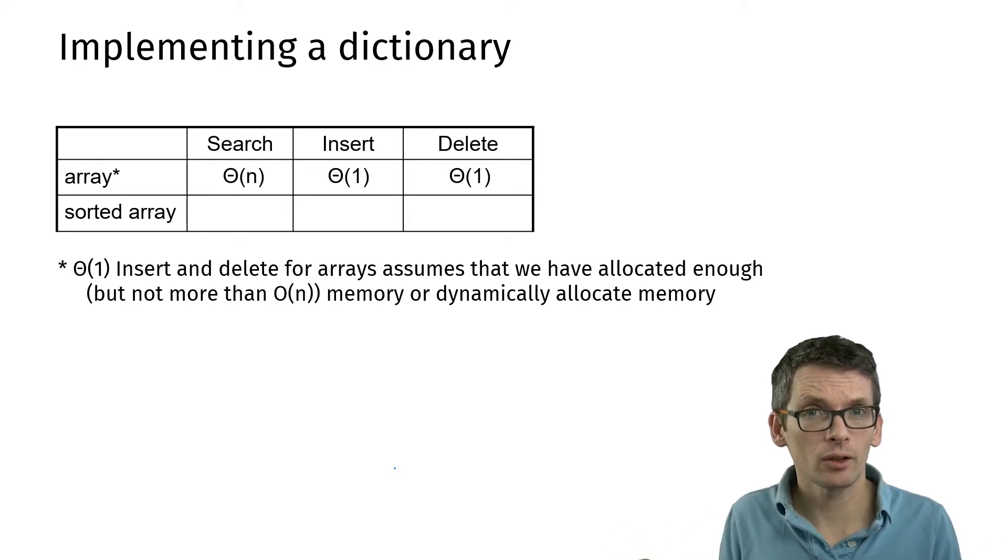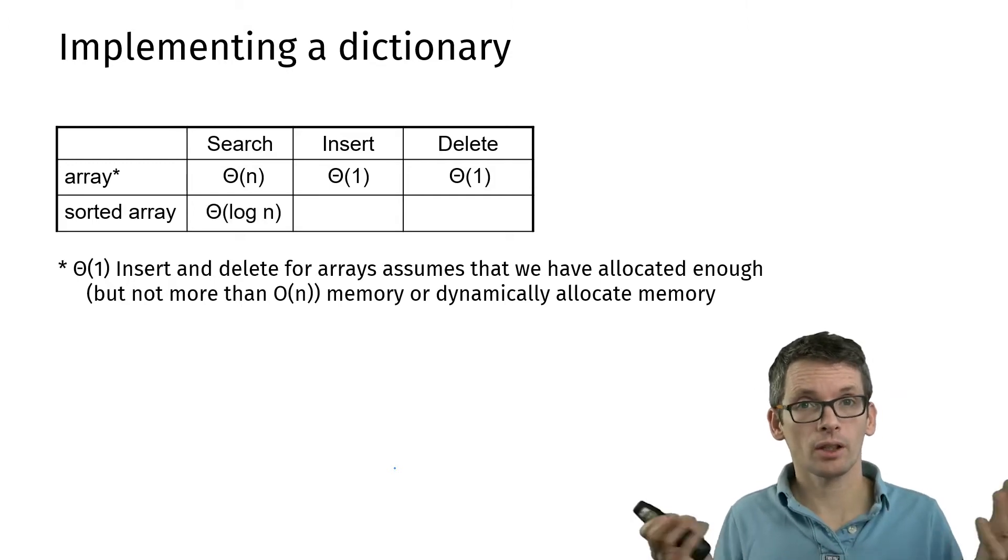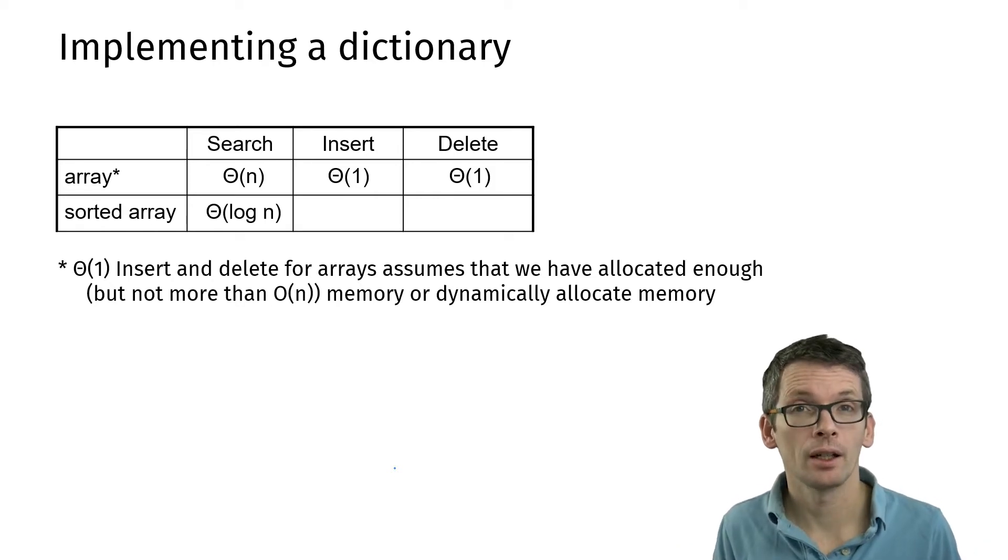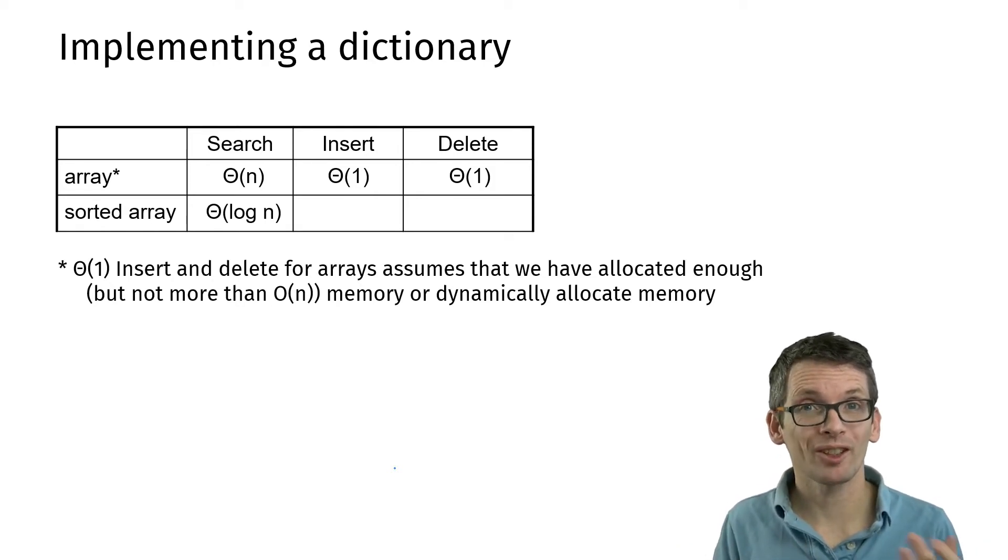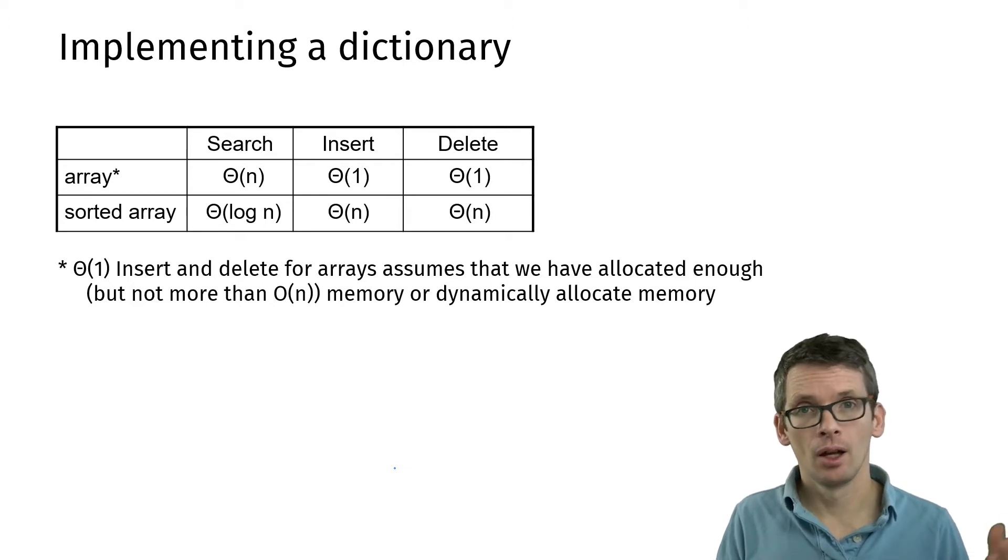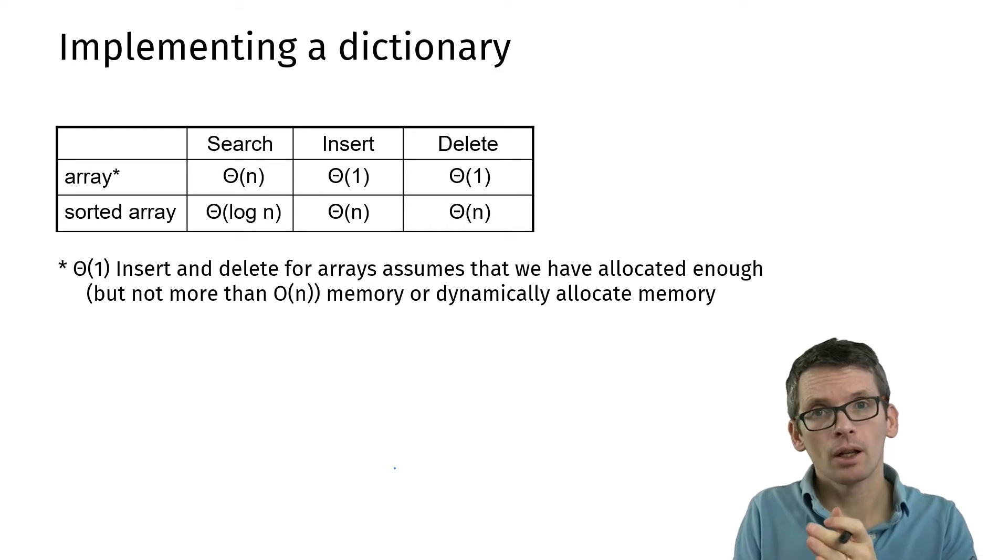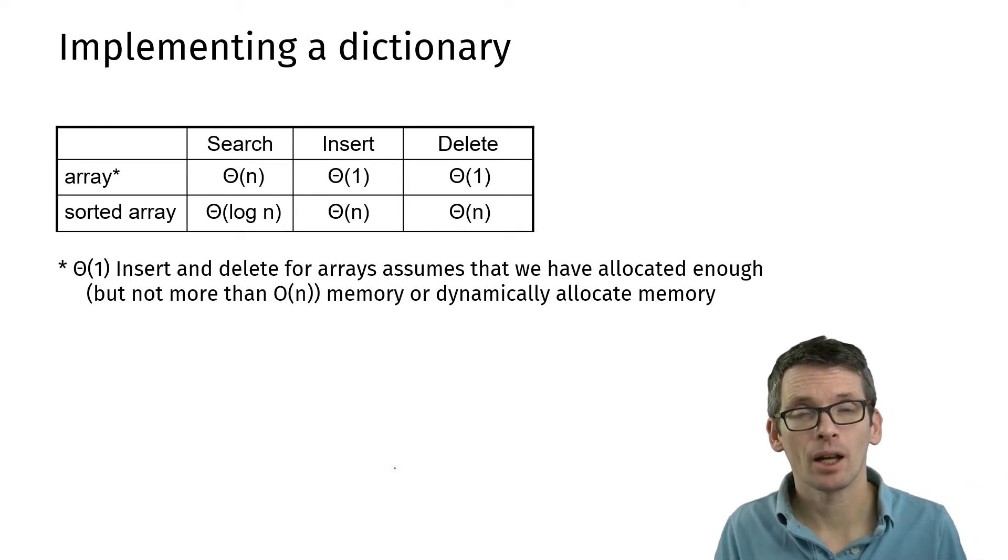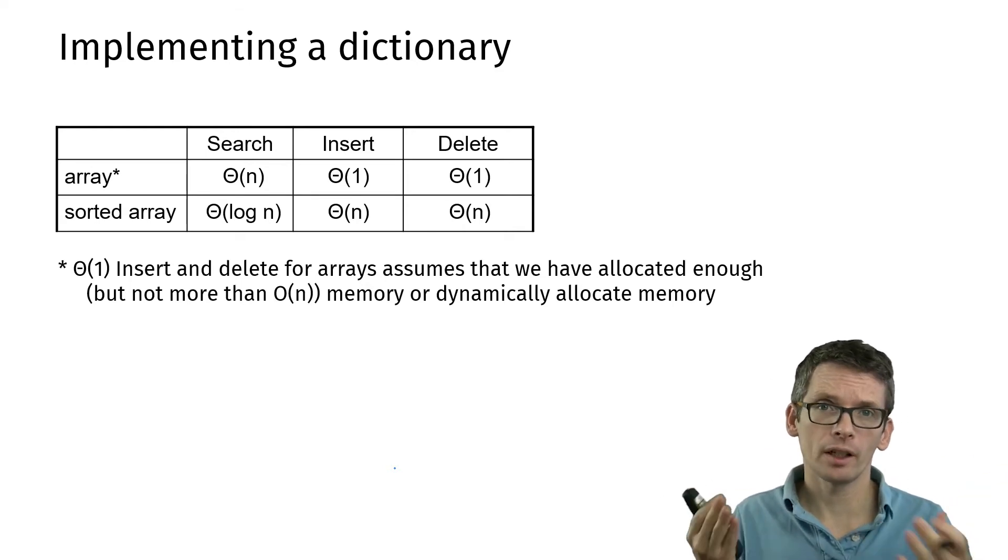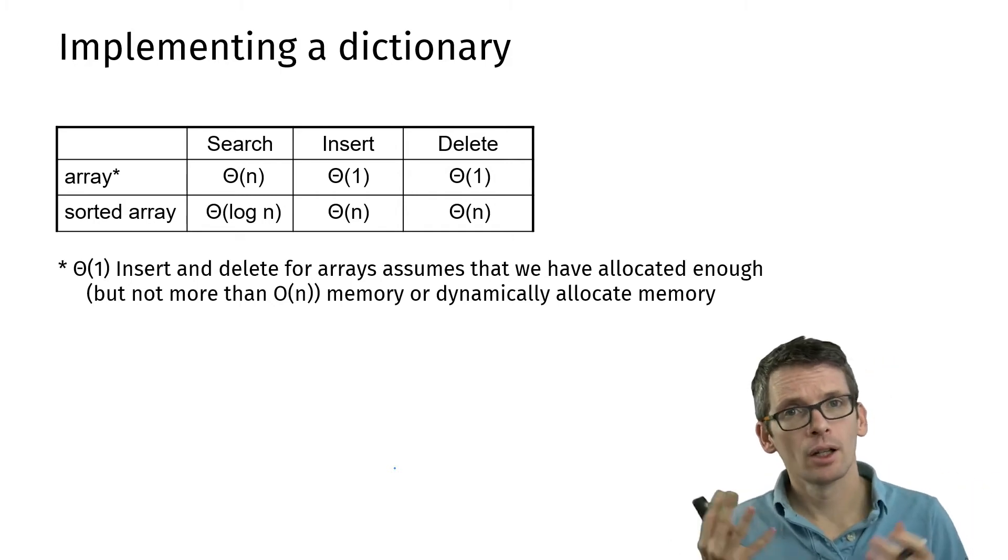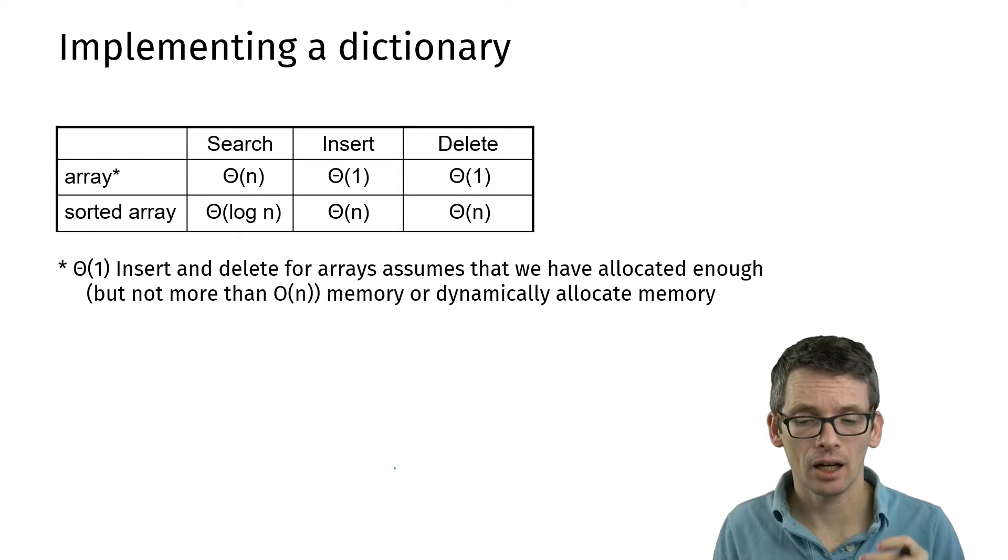How about sorted arrays? Sorted arrays have binary search, so we can indeed search fast—in order log n time, which is fast enough. But there we have the problem of inserting and deleting. Inserting and deleting in a sorted array takes linear time because I have to insert somewhere in between and then make space for that. If I delete, I will immediately want to delete it and then shift elements back. Both of this takes linear time.